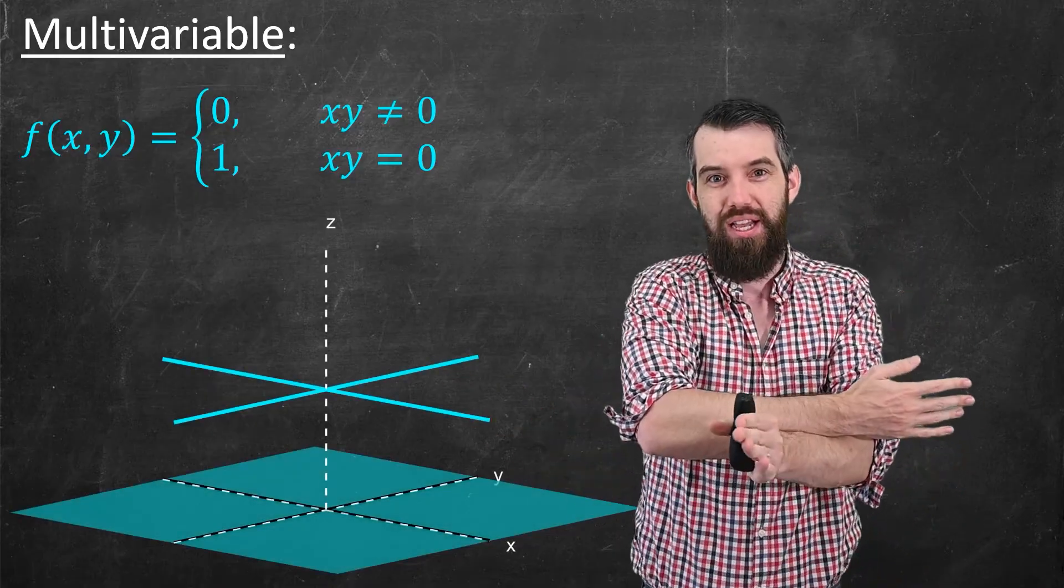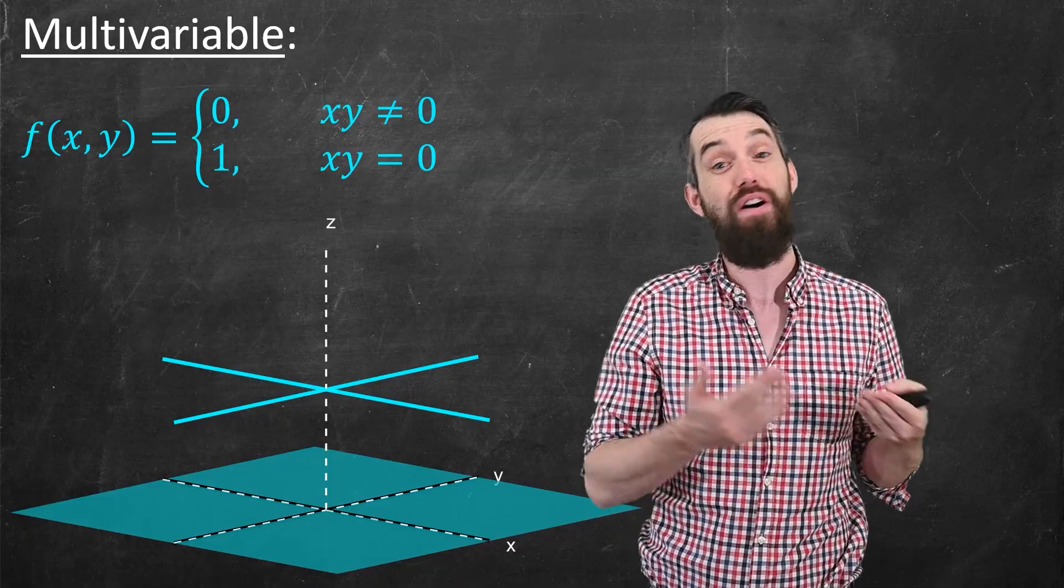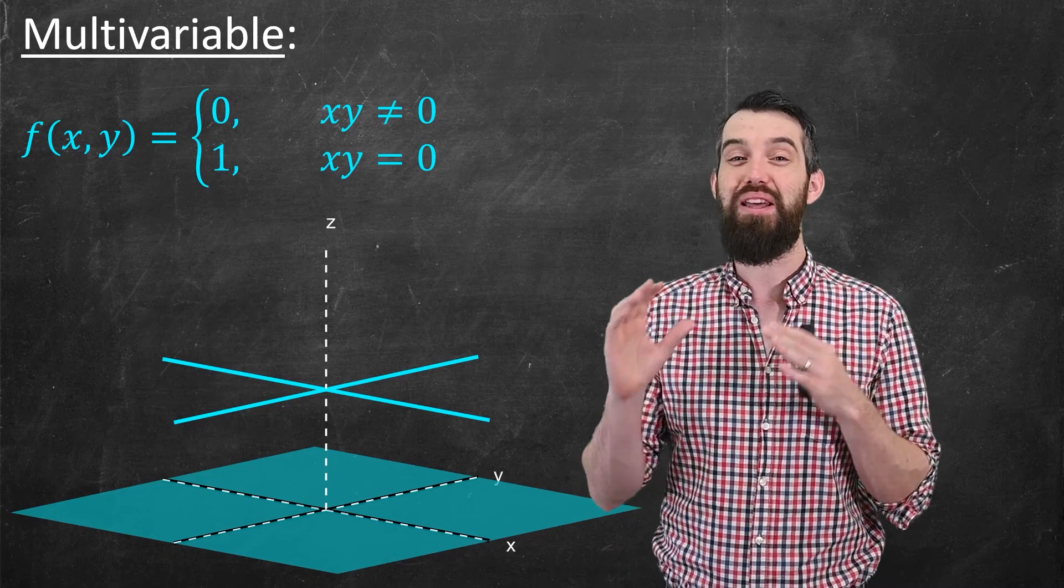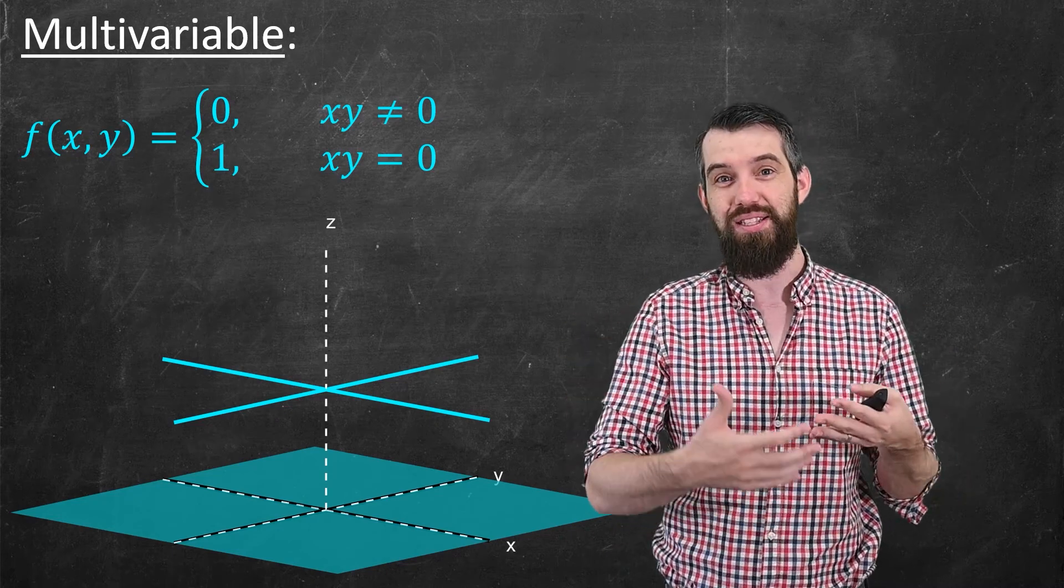Above the axes where x is 0 or y is equal to 0, the function has a height 1. Everywhere else, it has a height 0. Now, I really love this function because, as we're going to see, it helps to illustrate some of the core ideas of multivariable calculus.